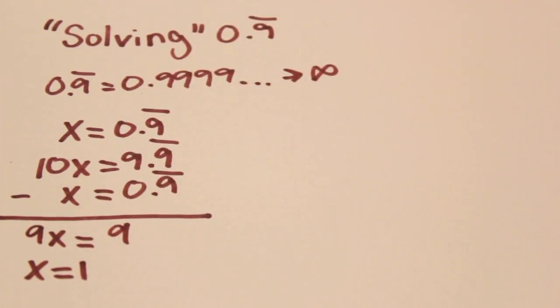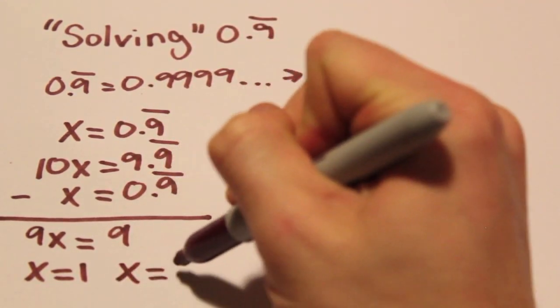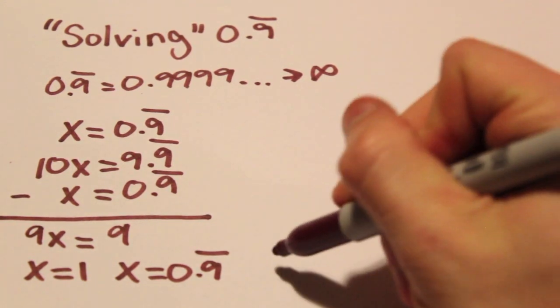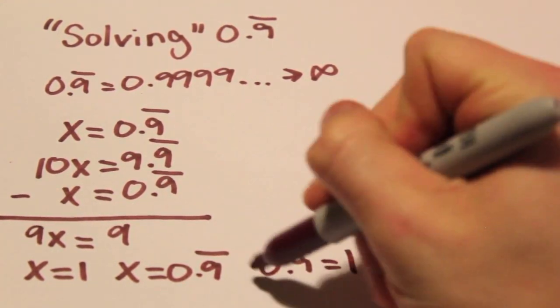But at the beginning of the equation, we let x equal 0.9 repeated. So how can x equal 0.9 repeated and x equal 1? The answer is simple: 0.9 repeated equals 1.